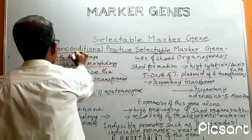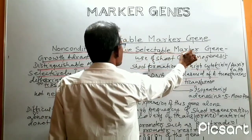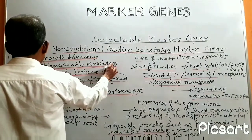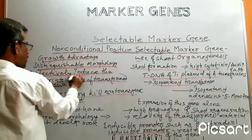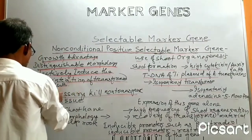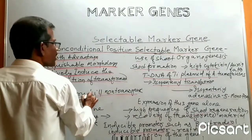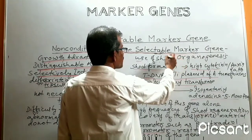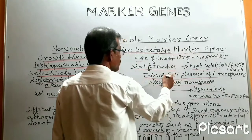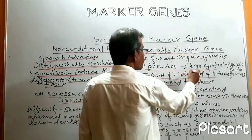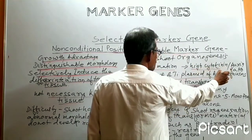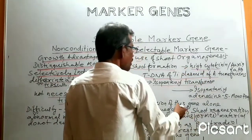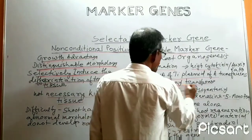Now we shall discuss about non-conditional positive selectable marker genes. This gene system confers a growth advantage and distinguishable morphology, selectively inducing the differentiation of transformed tissue without necessarily killing non-transgenic tissue. Use of shoot organogenesis for selection of transgenic plants is an example of this type of marker gene system. In tissue culture, shoot formation depends upon the presence of a high cytokinin to auxin ratio. There is a gene that codes for the enzyme isopentenyl transferase.